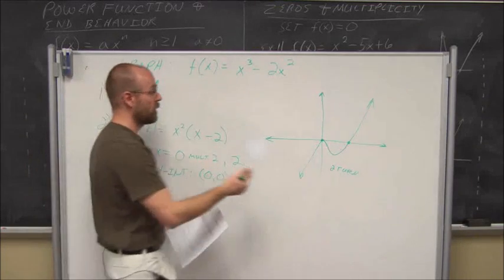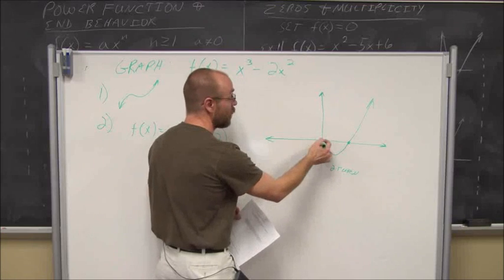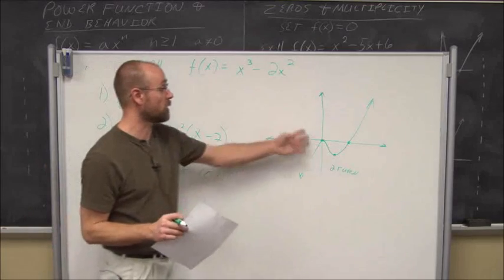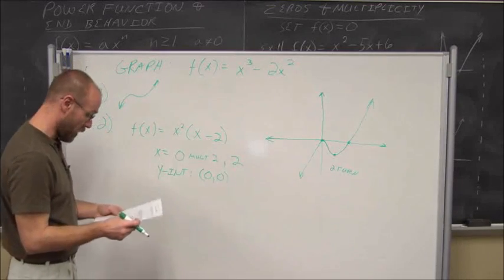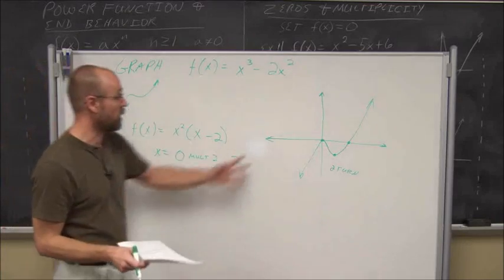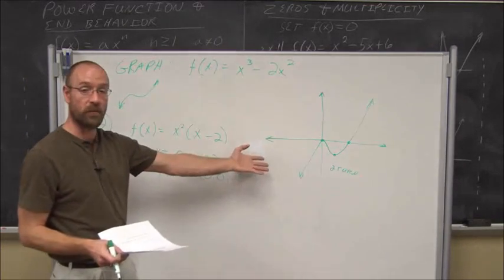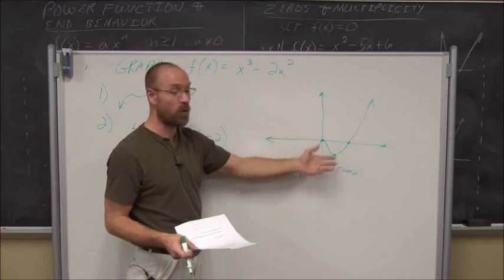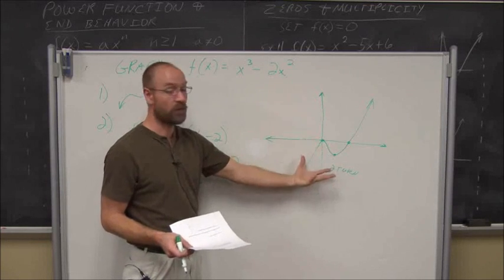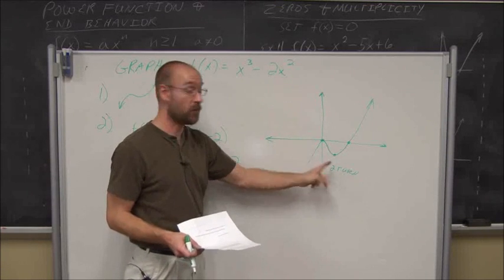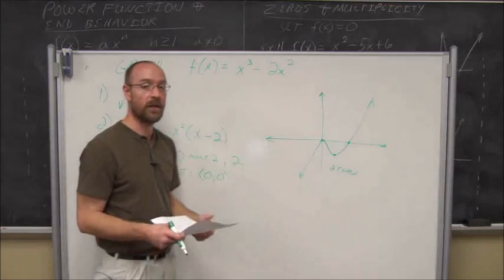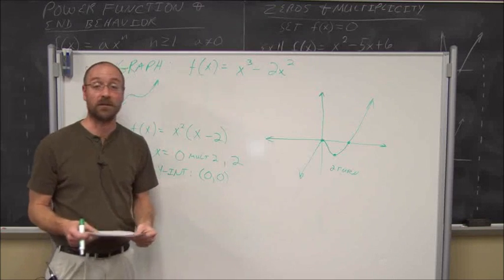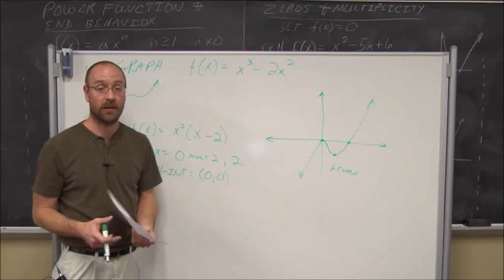We put it all together on the graph: we have the zeros, two turning points, and the cubic end behavior. The turning points correspond to local maximum and local minimum values from chapter 4. If we wanted to find their exact coordinates, we could — and we'll explore that in the next few sections of chapter 5. This has been section 5.1, polynomial functions. Thank you for watching.